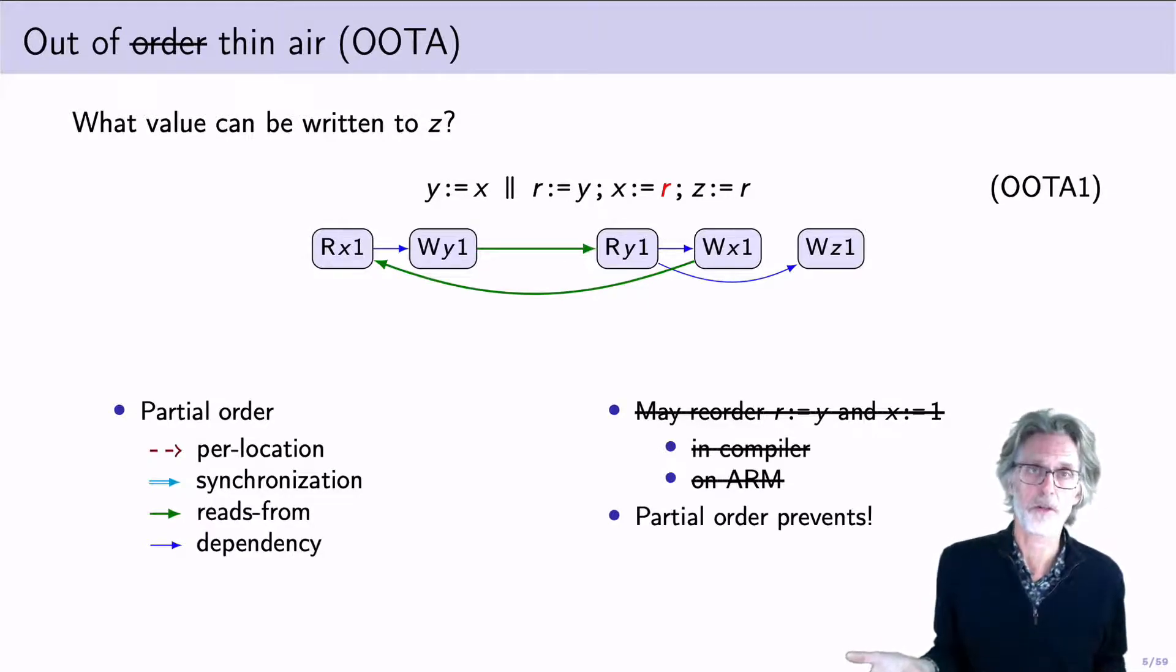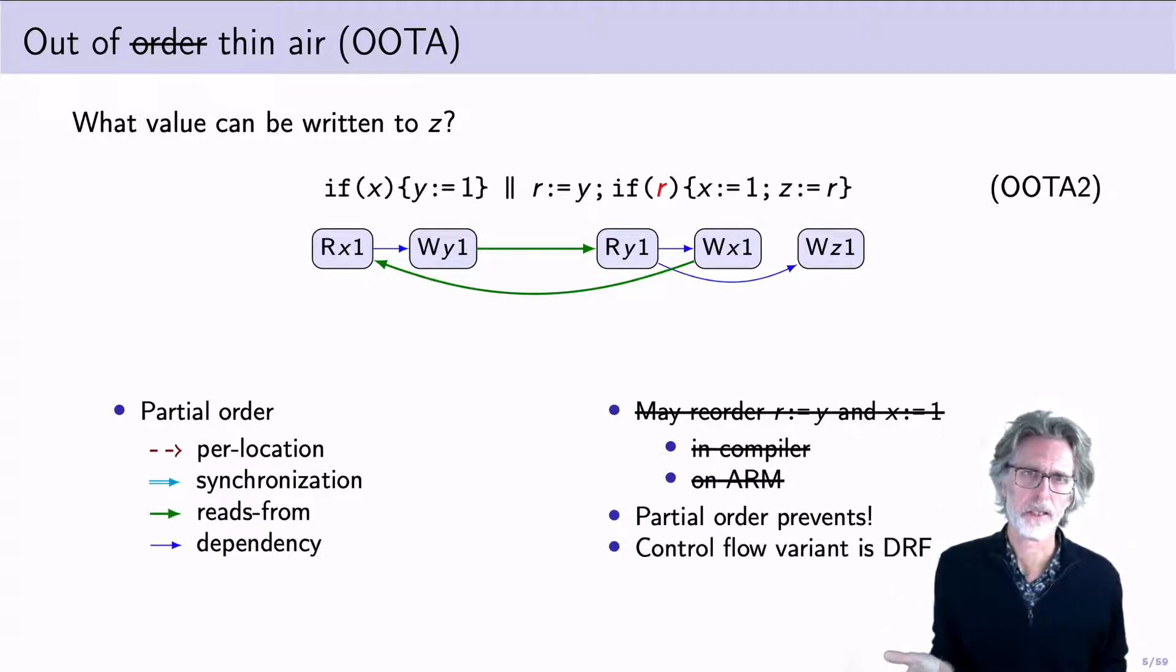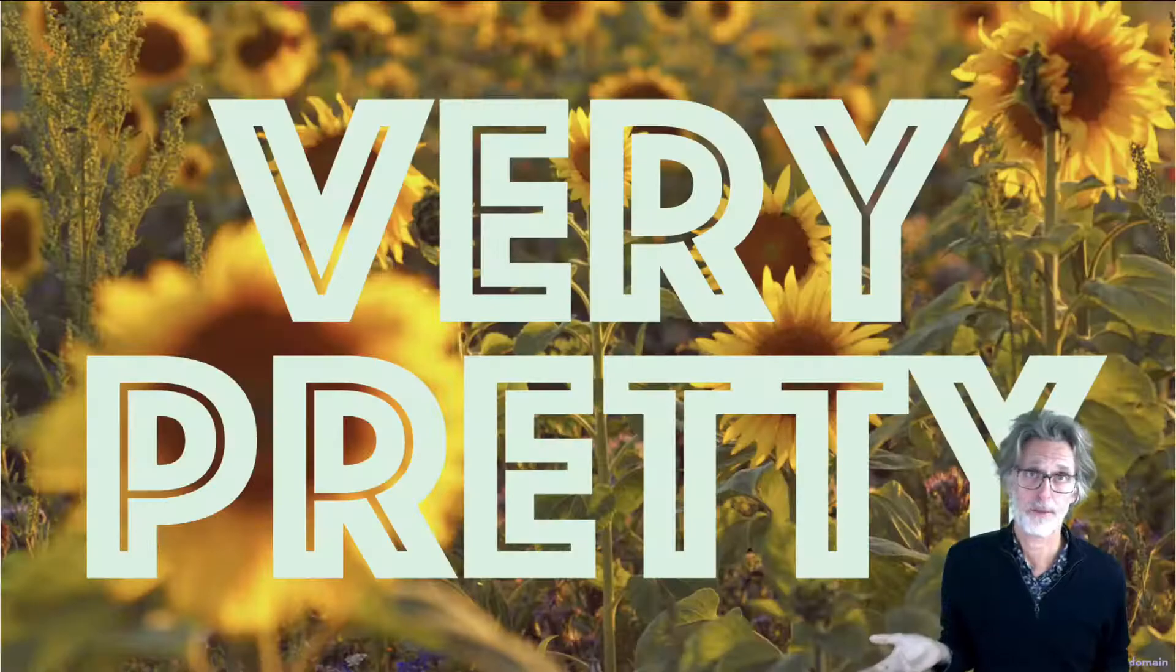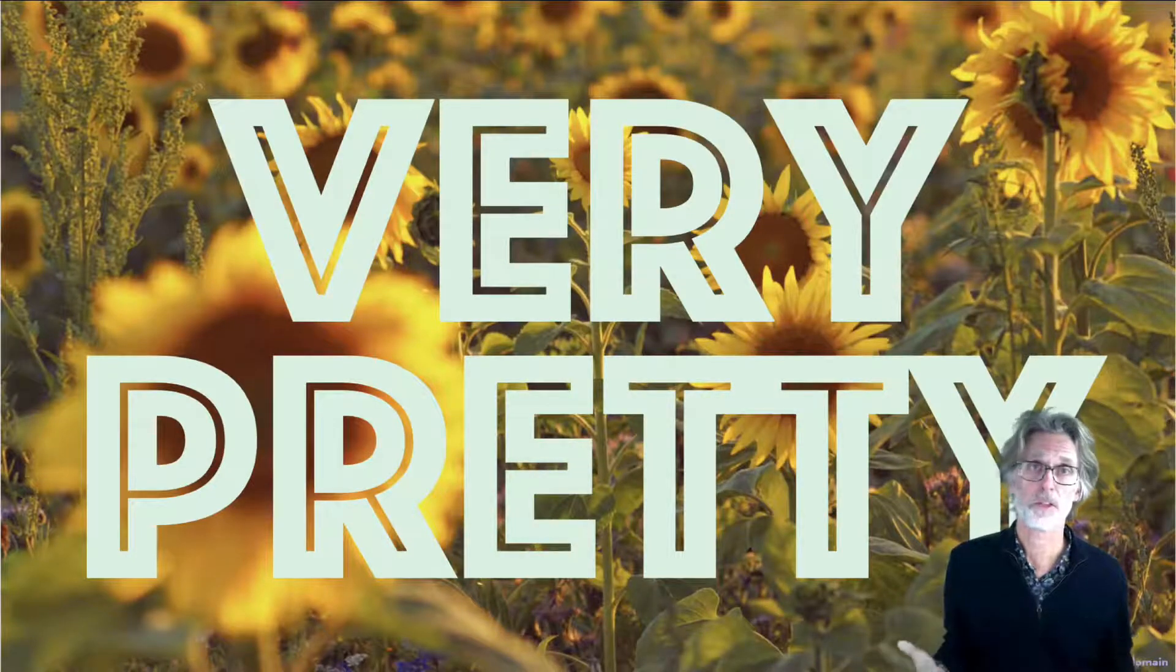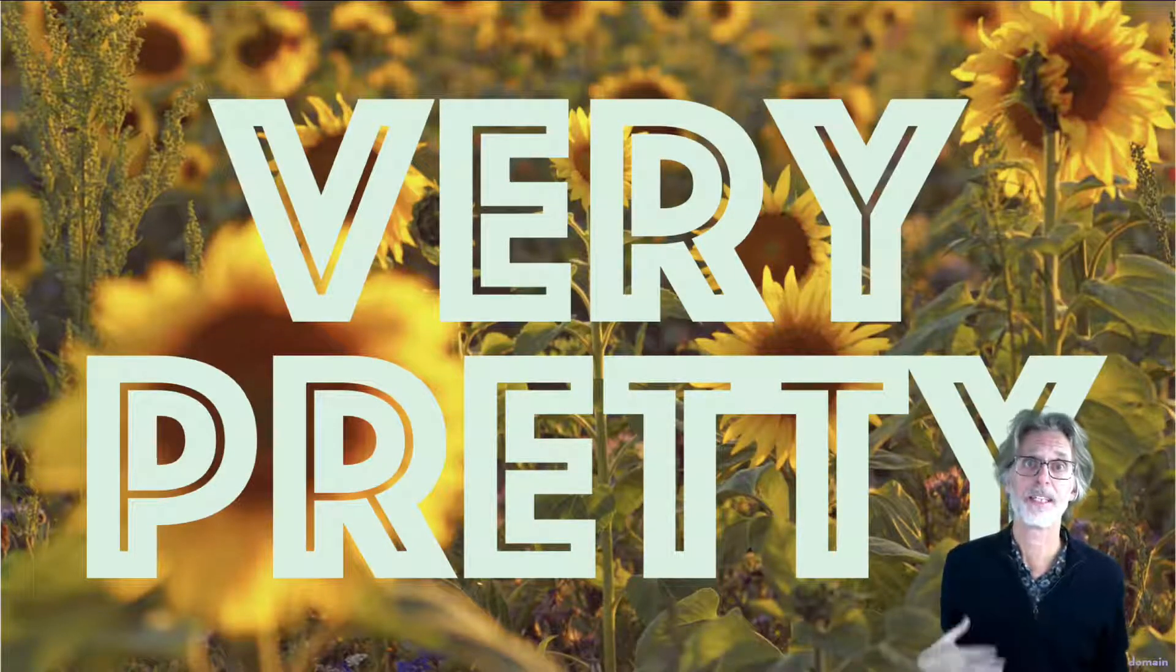However, there's variations of this theme. Instead of data dependencies, we could use control dependencies. And in this case, the program is actually data race free. If one were to allow this execution, this would violate the SCDRF theorem. So partial orders are very pretty, both for executions that we allow and that we disallow.